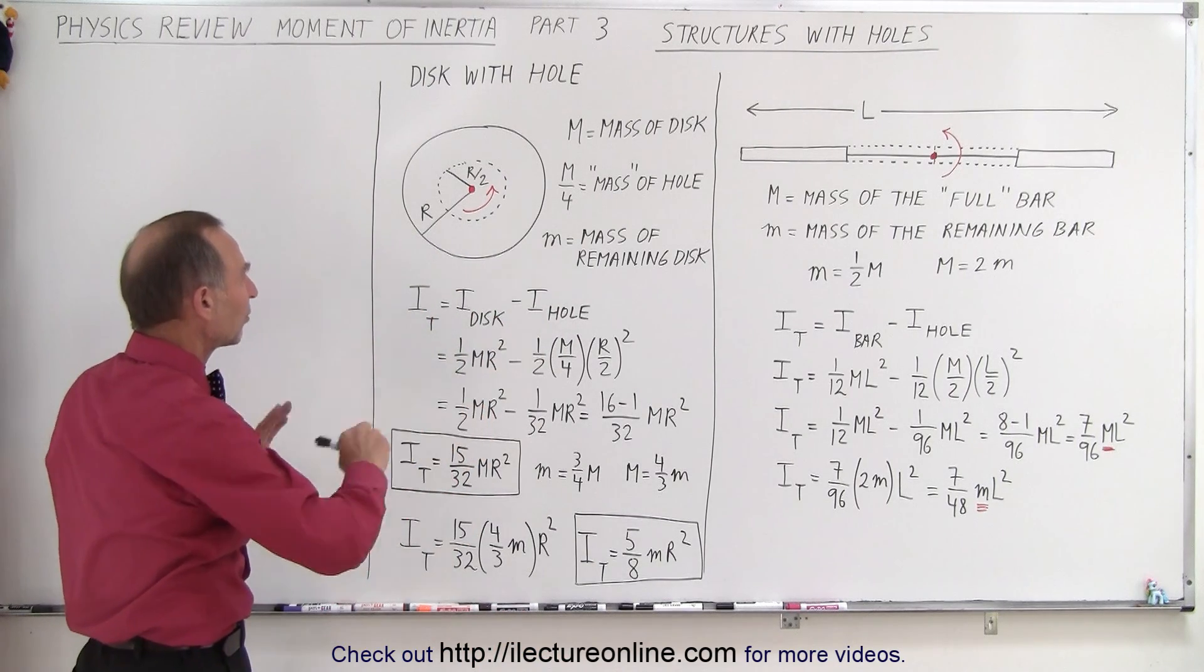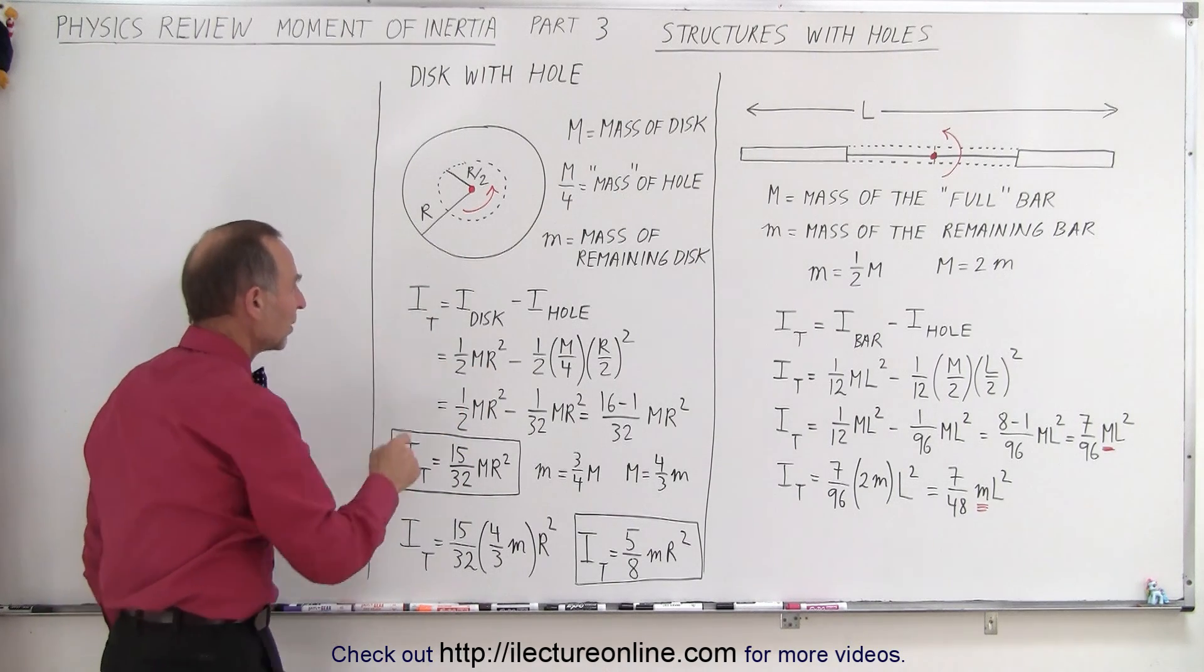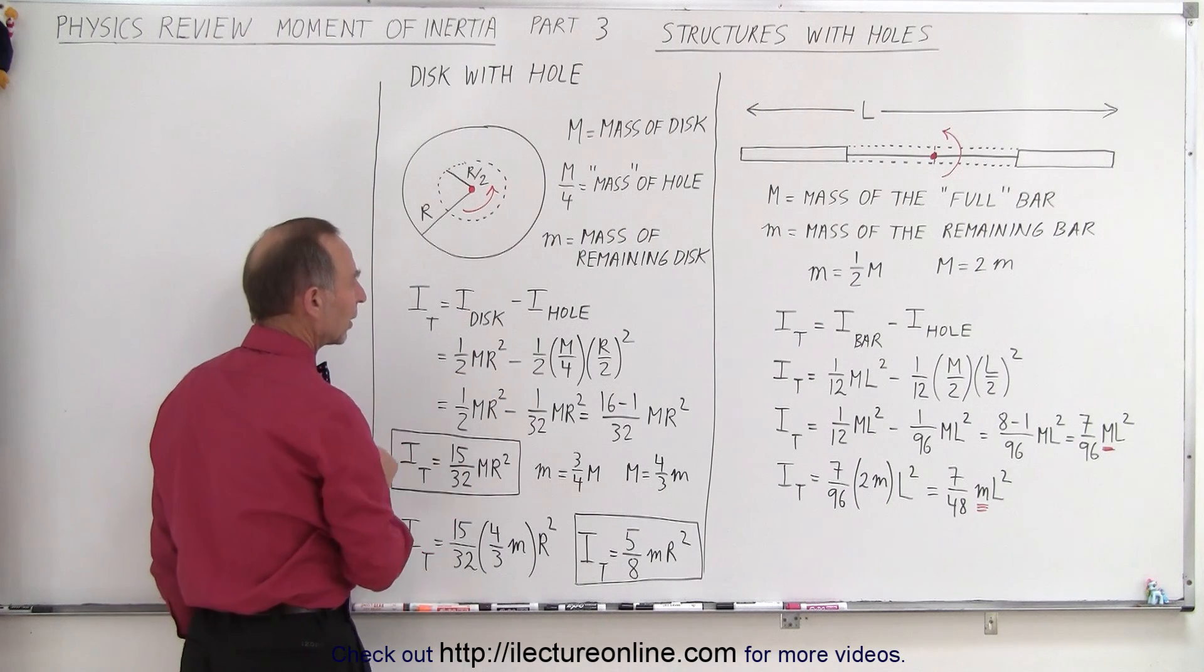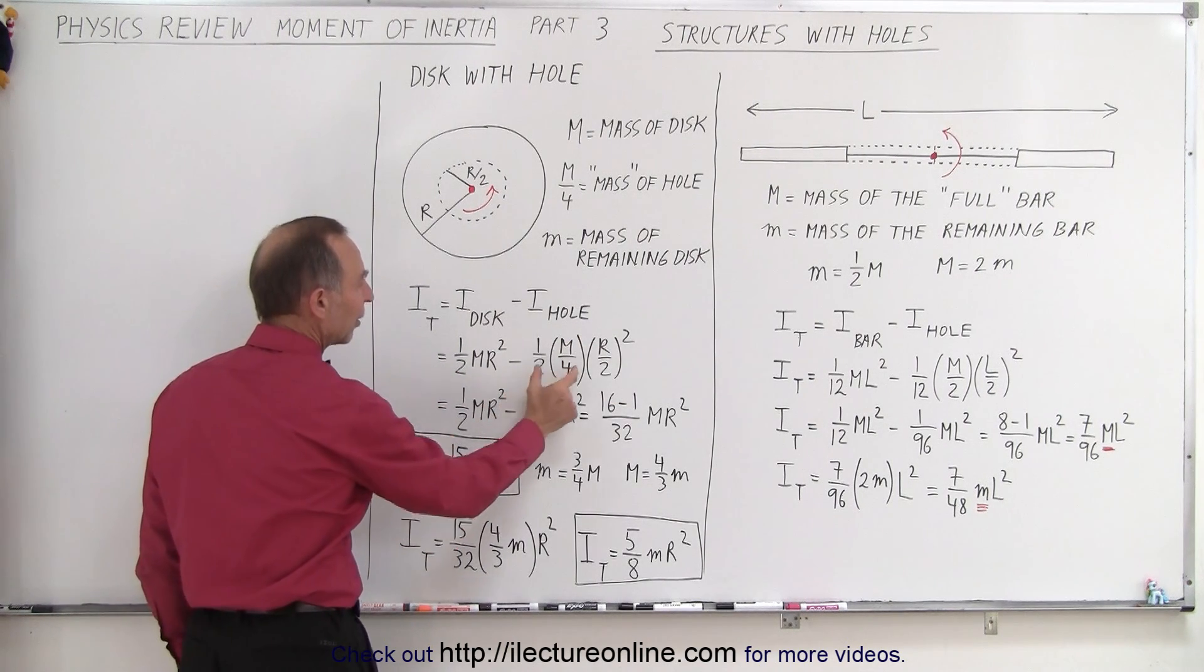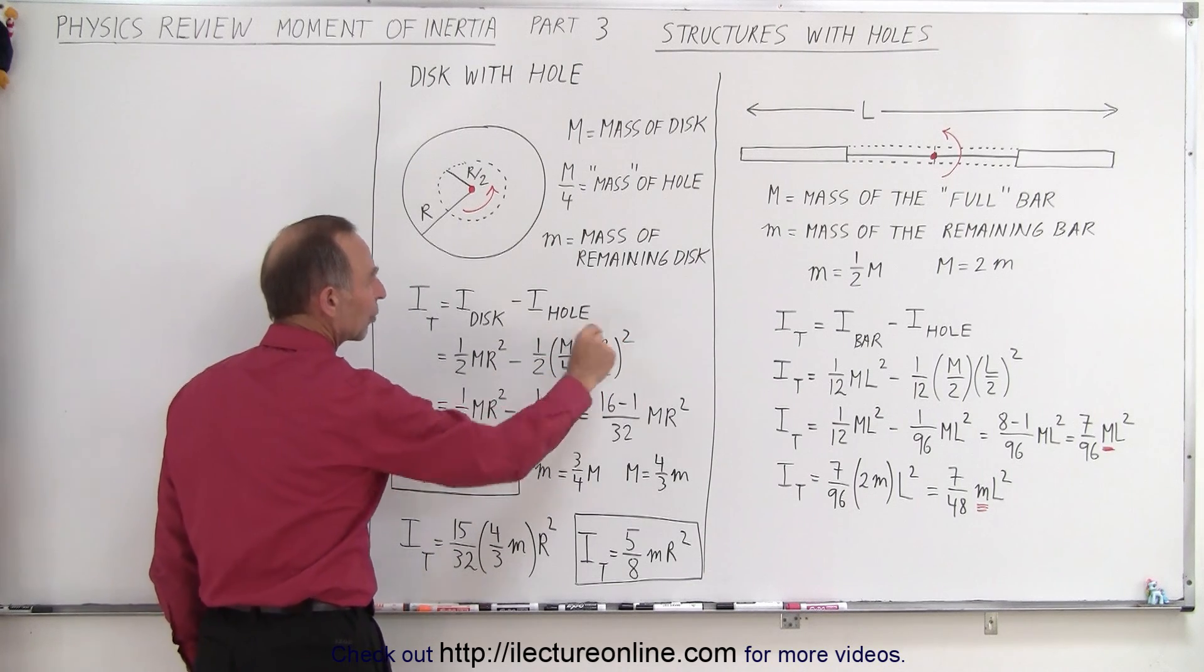So we're going to work out the problem as if we have M being the whole mass of the disk. So that means that the moment of inertia of the disk is 1/2 the mass of the disk times R squared minus the moment of inertia of the hole, which is 1/2 the mass of the hole, which is 1/4 the mass of the whole disk, times the radius of the hole squared.